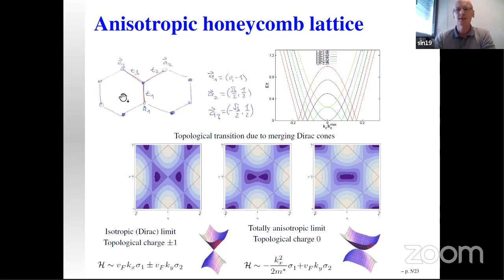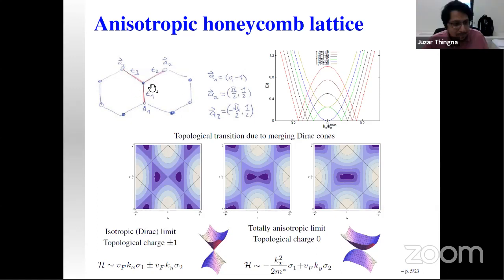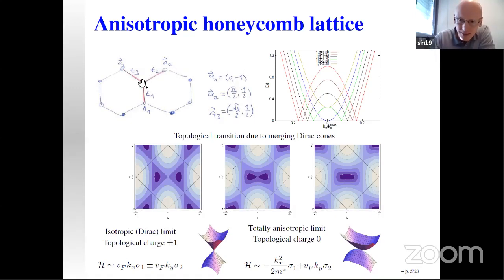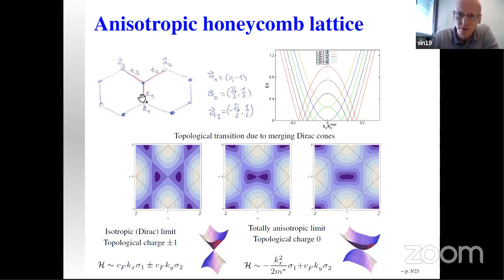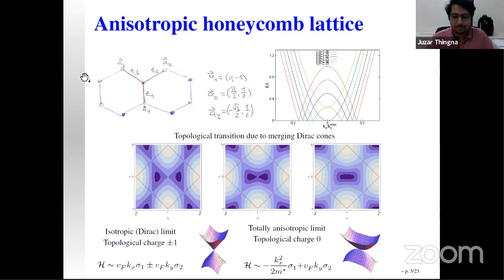Now I will go to the anisotropic lattice, and first explain what I mean by it. Here are two unit cells of the isotropic lattice. If we pinpoint the central atom, we recognize that in the isotropic case, the hopping processes toward each neighboring atom are precisely the same. We cannot distinguish amplitudes T1, T2, T3 — there is a C3 symmetry which allows rotation by 120 degrees with no change.